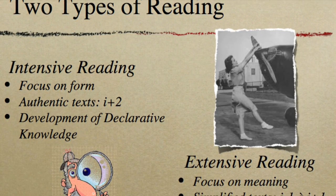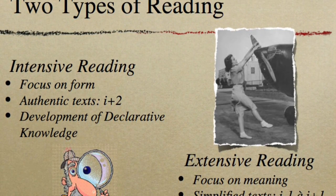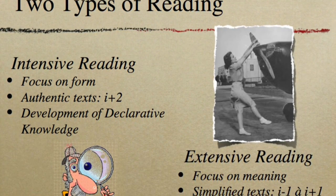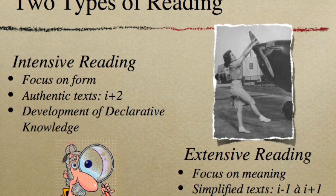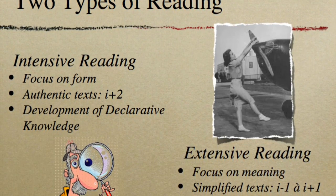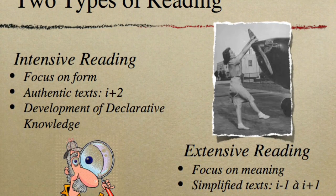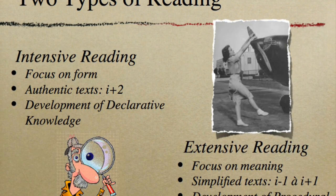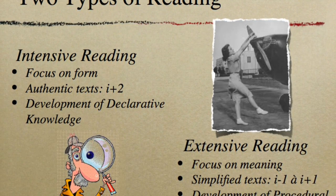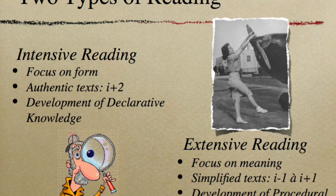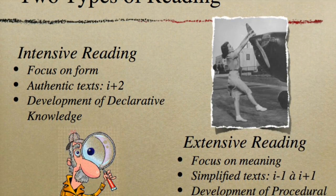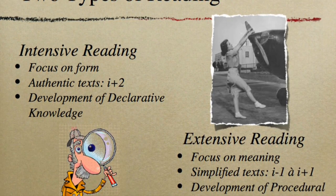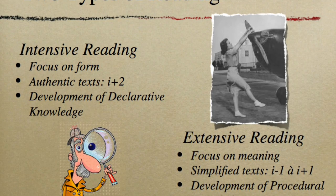Another type of reading — this goes back to the term extensive reading — is when we focus simply on meaning. We're going to read books that are simplified, because that way we don't have to worry about what all the words mean. We're trying to develop procedural knowledge, which means automatizing our language processes: recognition of letters and words, vocabulary access, and grammar. We're trying to automatize that so that we can read more quickly and more effectively.